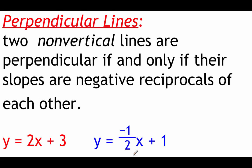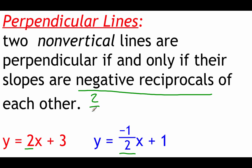As far as perpendicular lines go, the slopes aren't going to be the same — we're dealing with negative or opposite reciprocals. Given y equals 2x plus 3, the slope is 2. In the second equation y equals negative 1 half x plus 1, the slope is negative 1 half. Opposite reciprocal means flip the fraction and change the sign. If we're looking at a slope of 2, that's 2 over 1 — flip it to 1 over 2, then change the sign from positive to negative. There's our opposite reciprocal, perpendicular slope: negative 1 half.